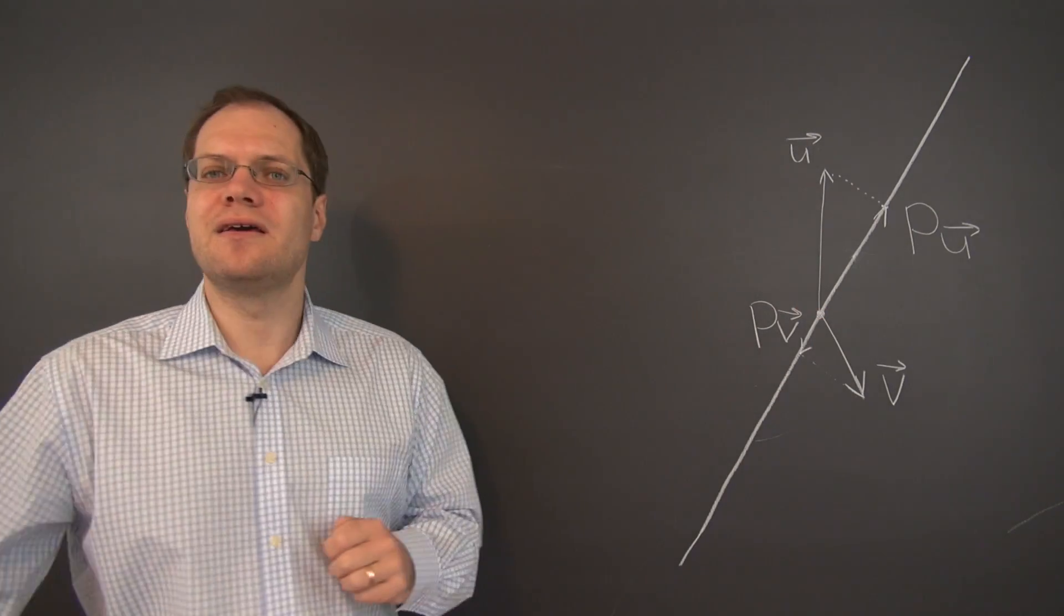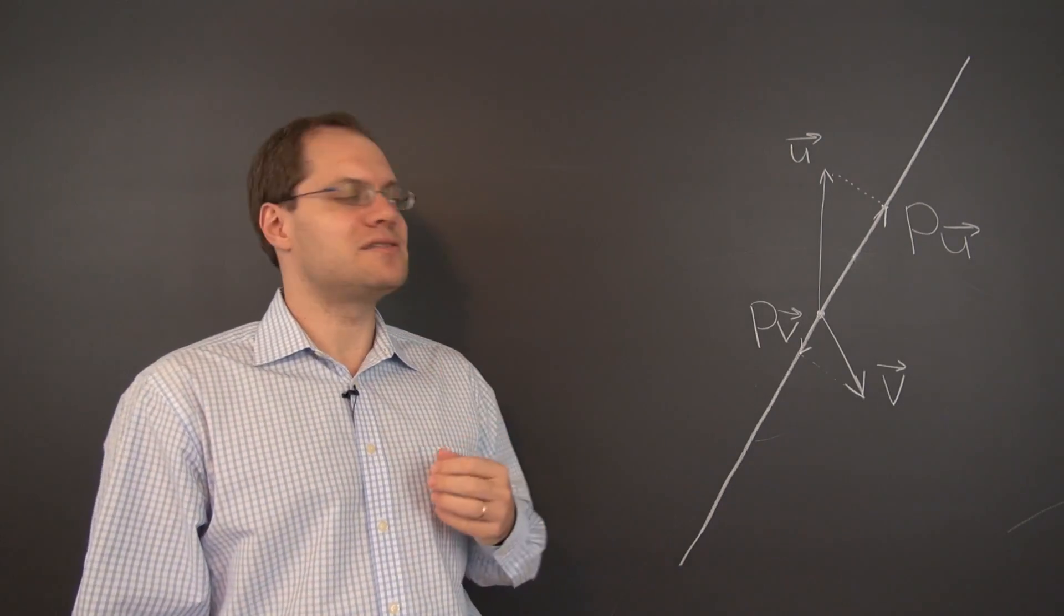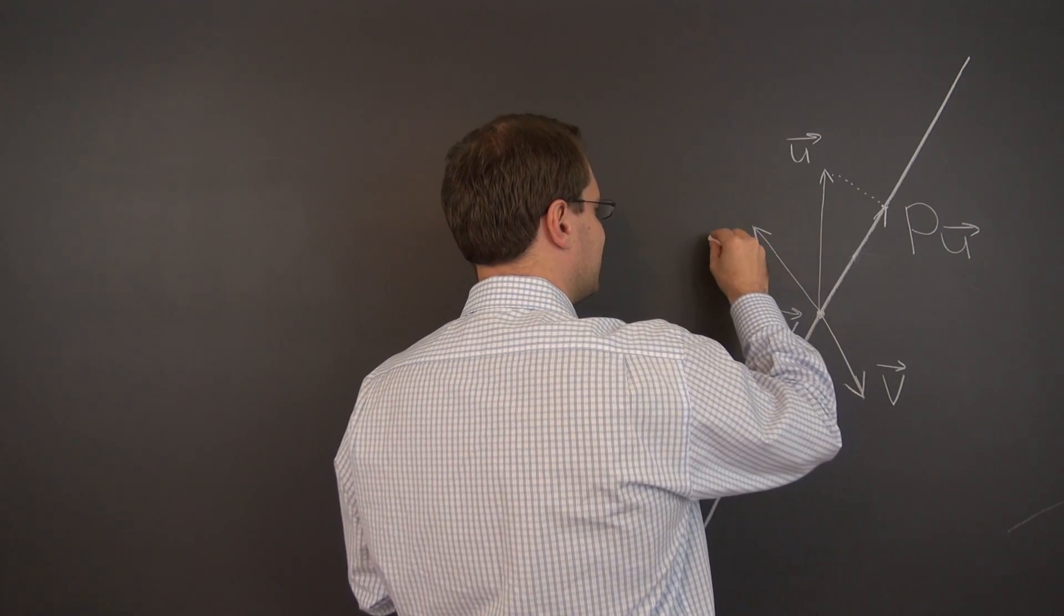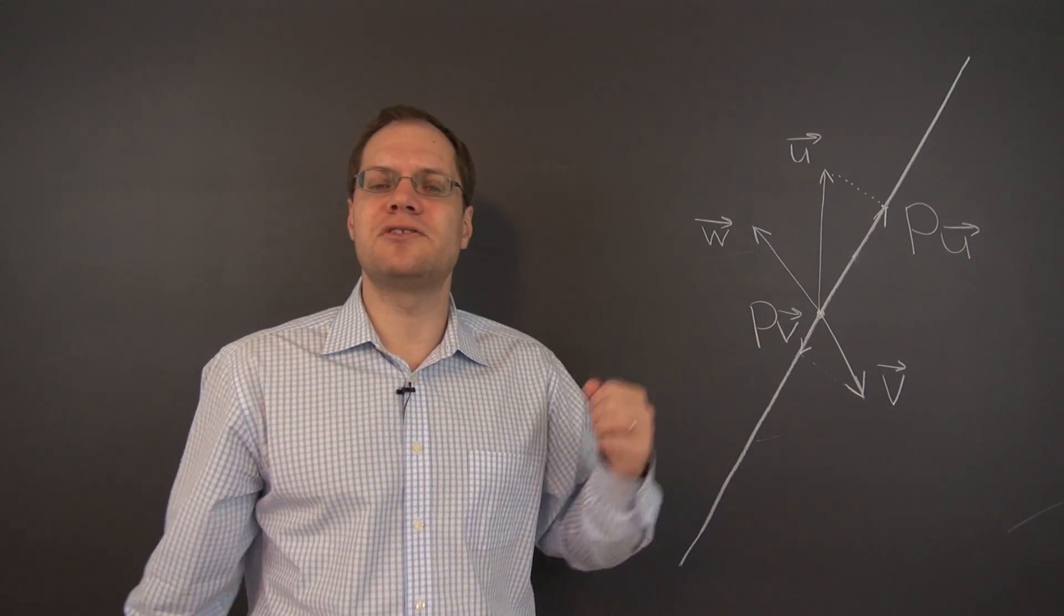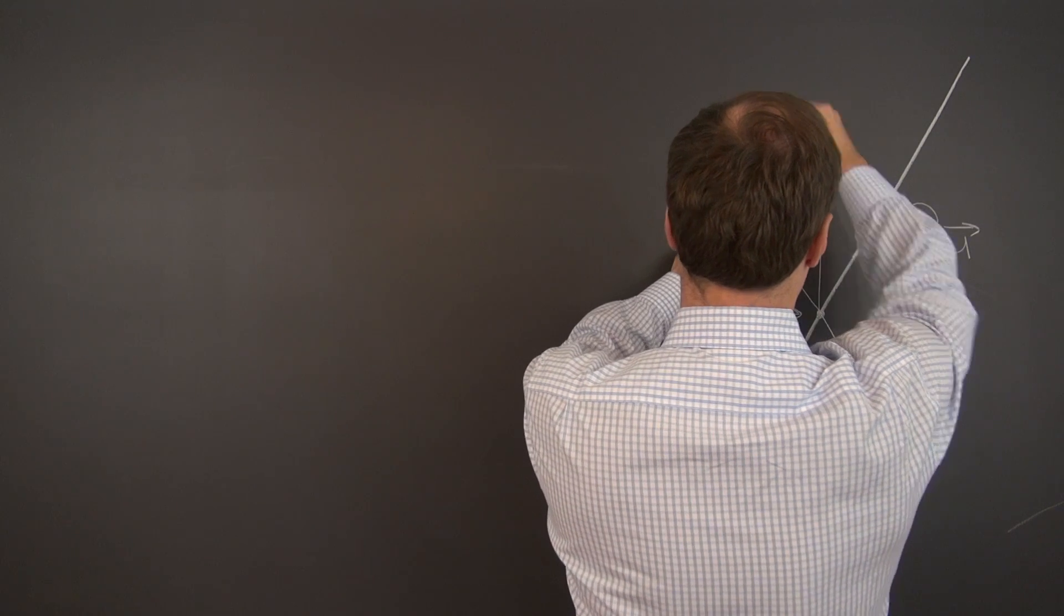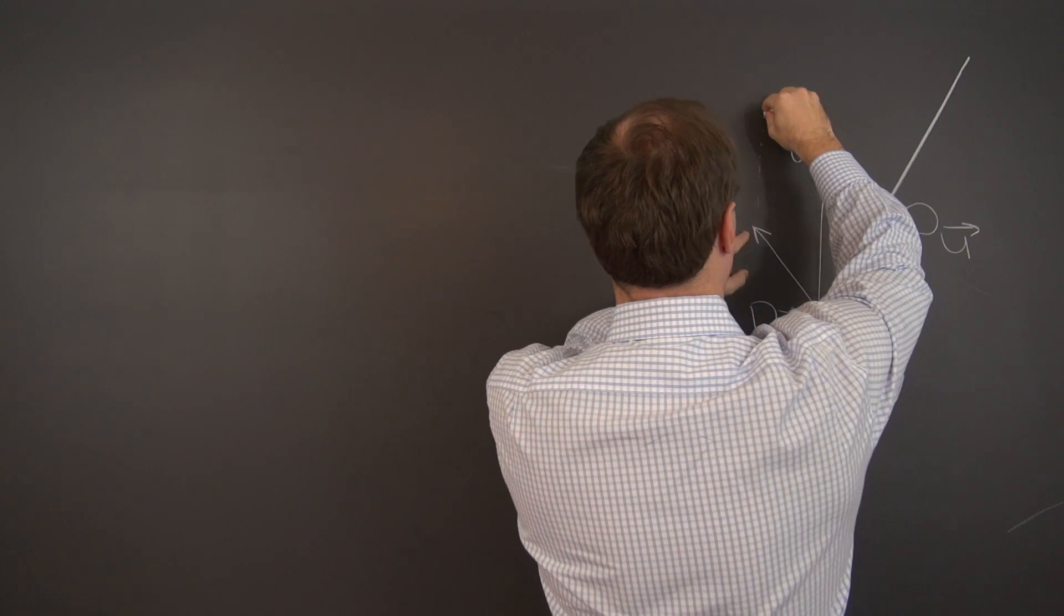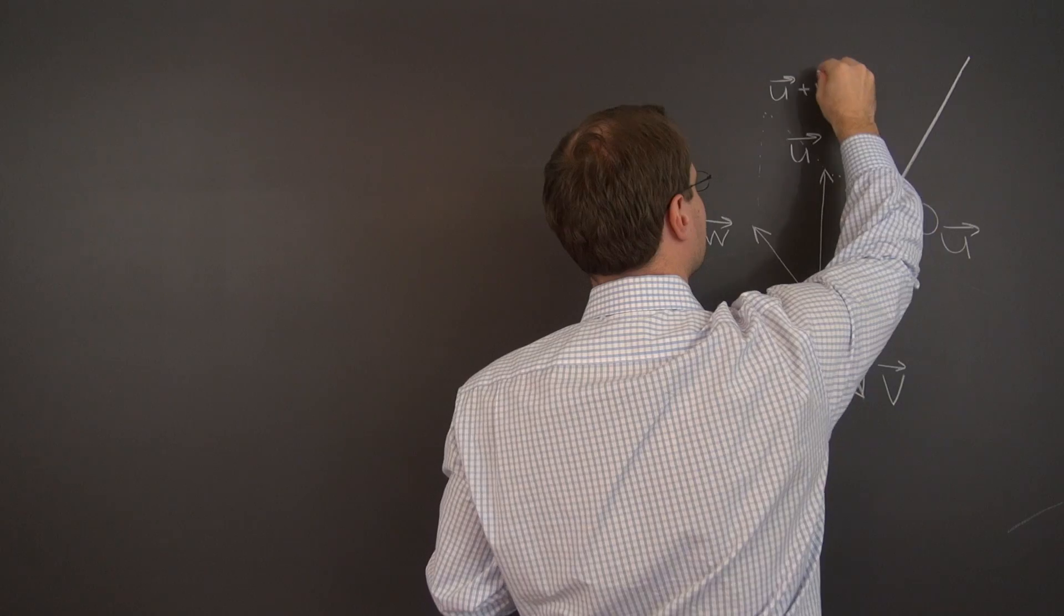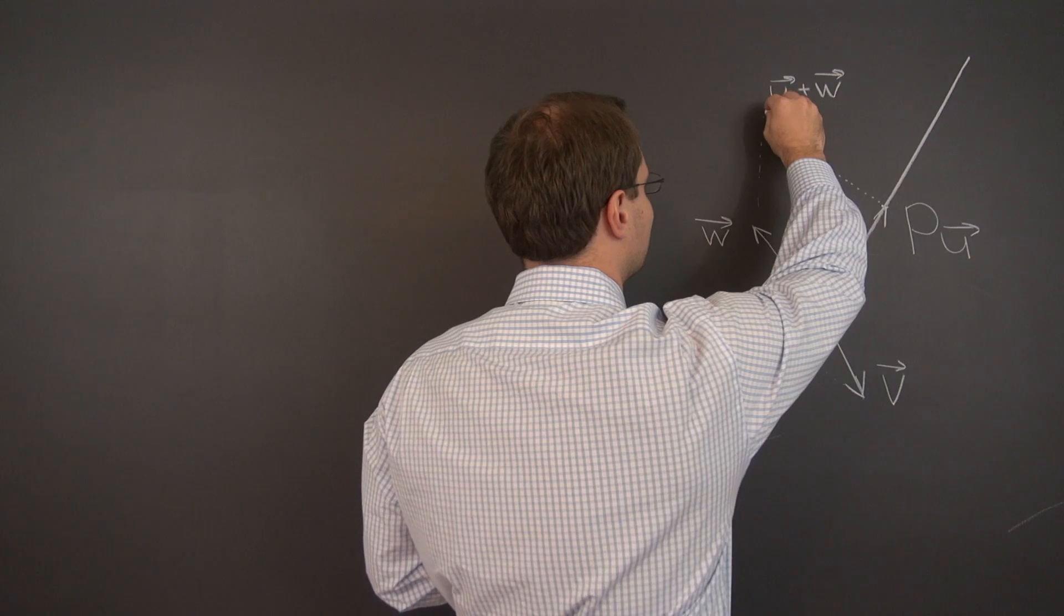Okay, is this transformation linear? Well, let's do the sum test first. Let's consider two vectors. I think I would prefer to draw them on the same side. So we once again have w. Although it doesn't matter, it'll just make for a less messy drawing. And their sum would be right here. This is u plus w. To avoid making this messy, I will not actually draw the sum, but it's right here.